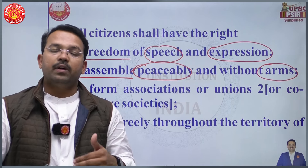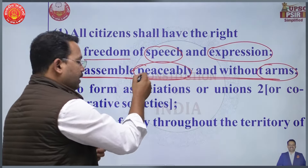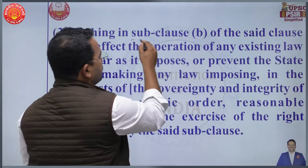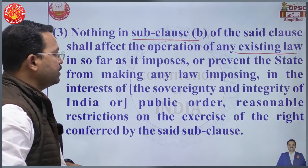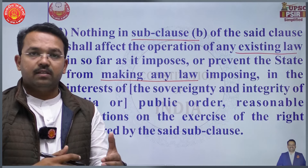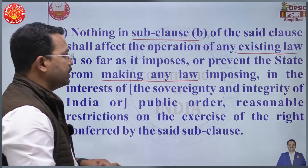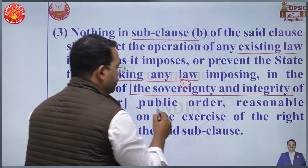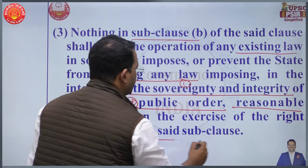There are certain restrictions on this freedom. Nothing in sub-clause B of the said clause shall affect the operation of existing law, or insofar as it prevents the state from making any new law. The new law can be made in the interest of the sovereignty and integrity of India, and public order — these are reasonable restrictions on the exercise of the right conferred by the said sub-clause.